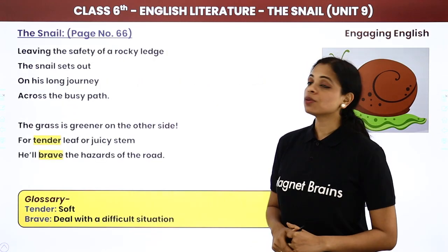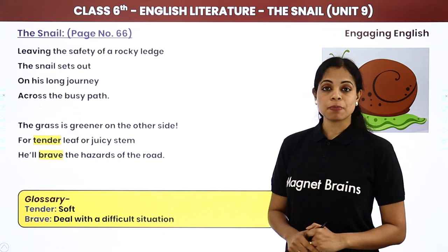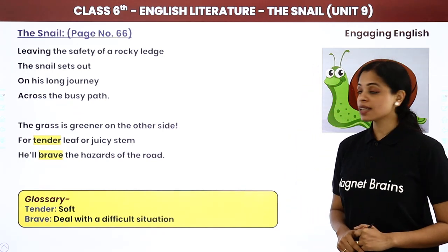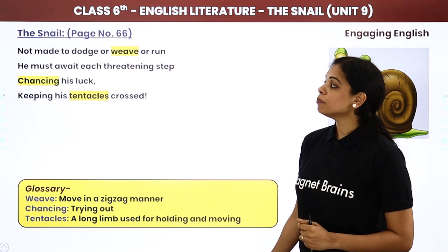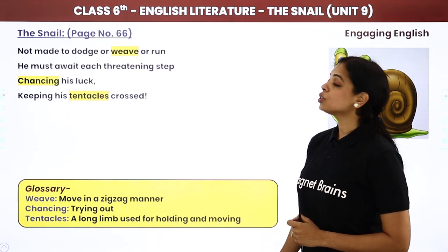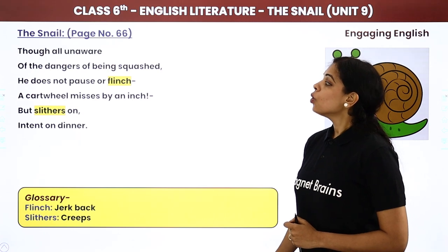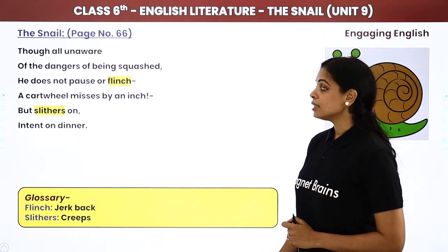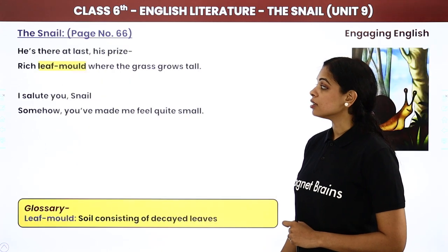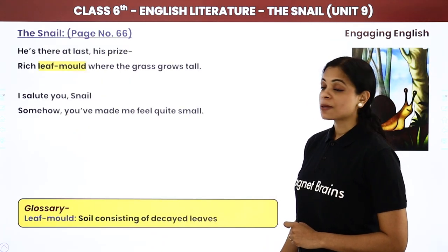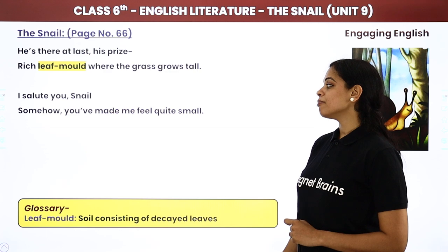Leaving the safety of a rocky ledge, the snail sets out on his long journey across the busy path. The grass is greener on the other side. For tender leaf or juicy stem, he will brave the hazards of the road. Not made to dodge or weave or run, he must await each threatening step, chancing his luck, keeping his tentacles crossed. Though all unaware of the dangers of being squashed, he does not pause or flinch. A cartwheel misses by an inch. But slithers on, intent on dinner. He is there at last. His prize — rich leaf mold where the grass grows tall. I salute you snail, somehow you have made me feel quite small.